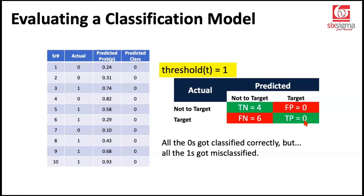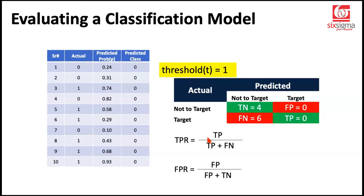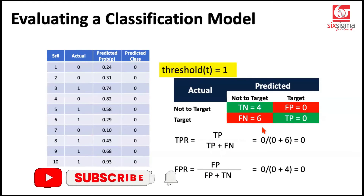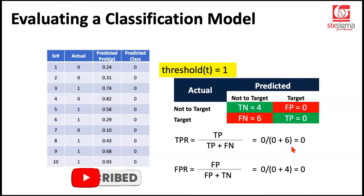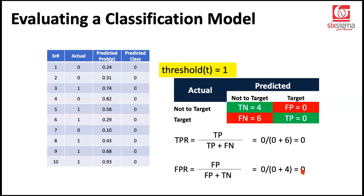So these values are going to be zeros. Calculating TPR and FPR by plugging in these values gives both as zero. At threshold of 1, TPR is 0 — there's no correct identification of a one as a one, we completely failed. But FPR is also 0 — we made no error because we only predicted zeros, so all zeros were correctly identified with no false alarms.